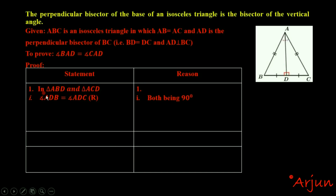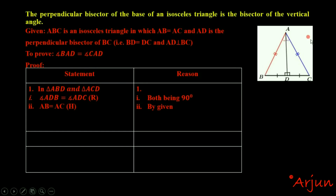Triangle ABD and triangle ACD are congruent. Point one: angle ADB is equal to angle ADC — ADB and ADC are both 90 degrees, since AD is the perpendicular bisector, so both are 90 degrees. And then AB is equal to AC, as given, since triangle ABC is isosceles.